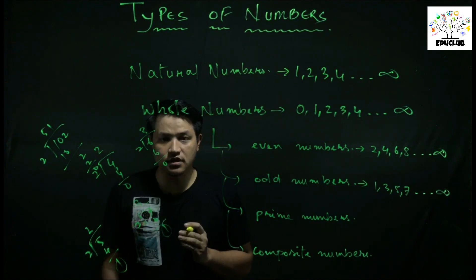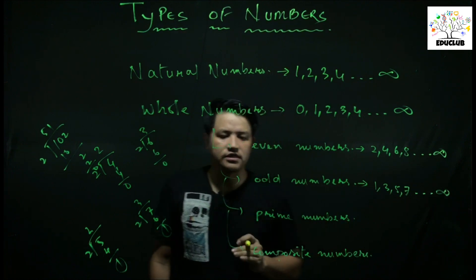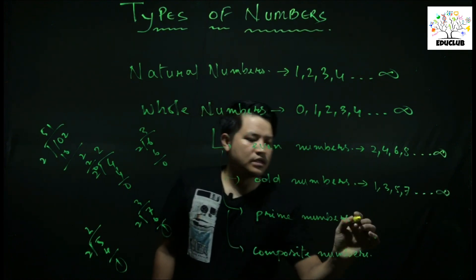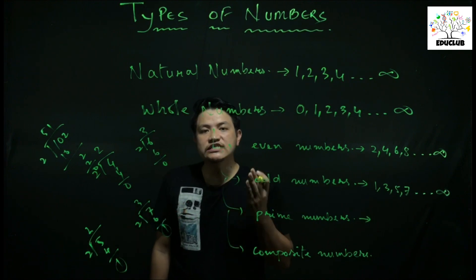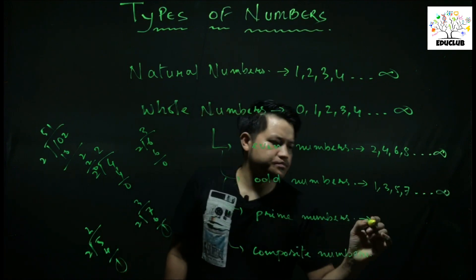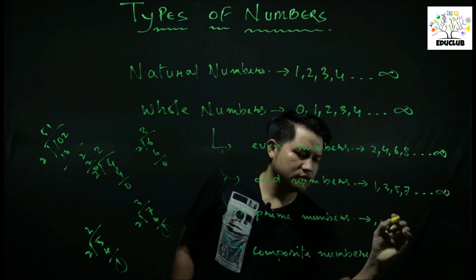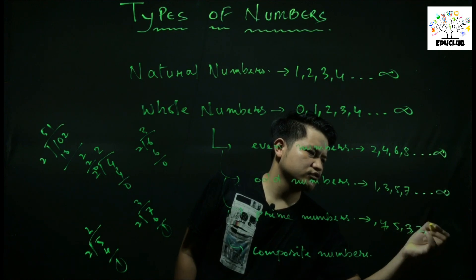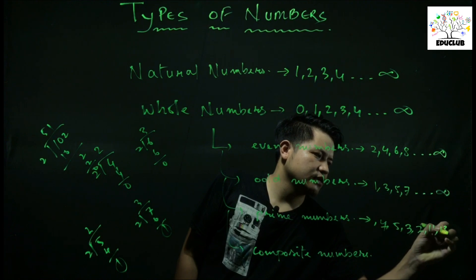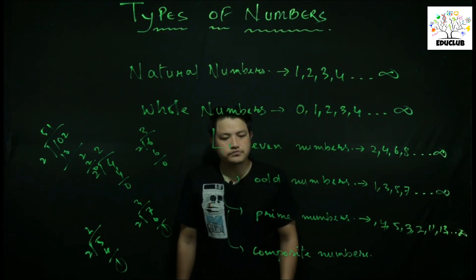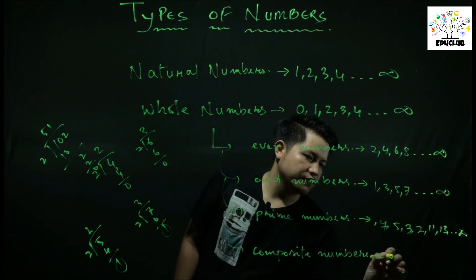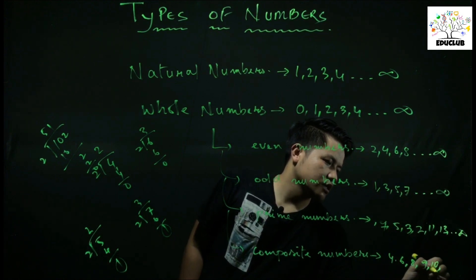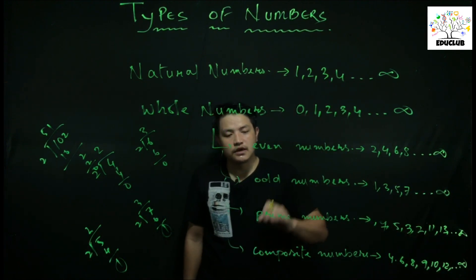Odd numbers leave a remainder when divided by 2. Next, we have Prime Numbers and Composite Numbers — these are interrelated. Even number 2 is also a prime number. Prime numbers are numbers which have only 2 factors. Examples of prime numbers: 2, 3, 5, 7, 11, 13, and so on. Composite numbers include 4, 6, 8, 9, 10, 12, and so on.